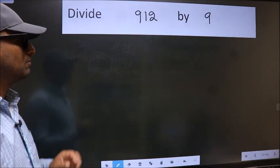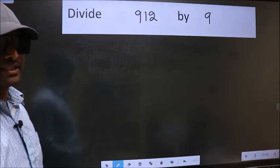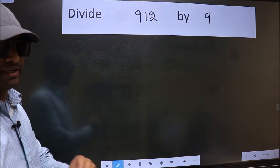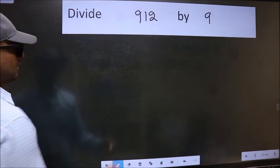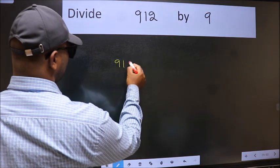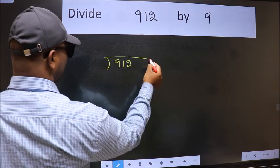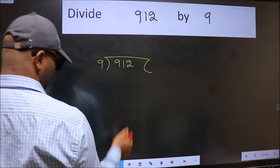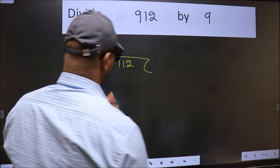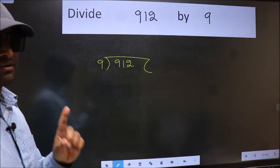Divide 912 by 9. To do this division, we should frame it in this way. 912 here and 9 here. This is your step 1.